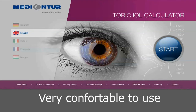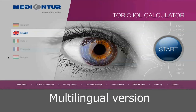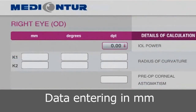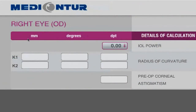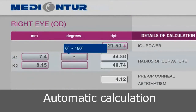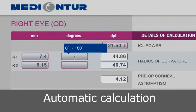The Metacontour calculator is also very comfortable to use, with its multilingual version, data entering in millimeters, and automatically calculated degrees and spherical equivalents.